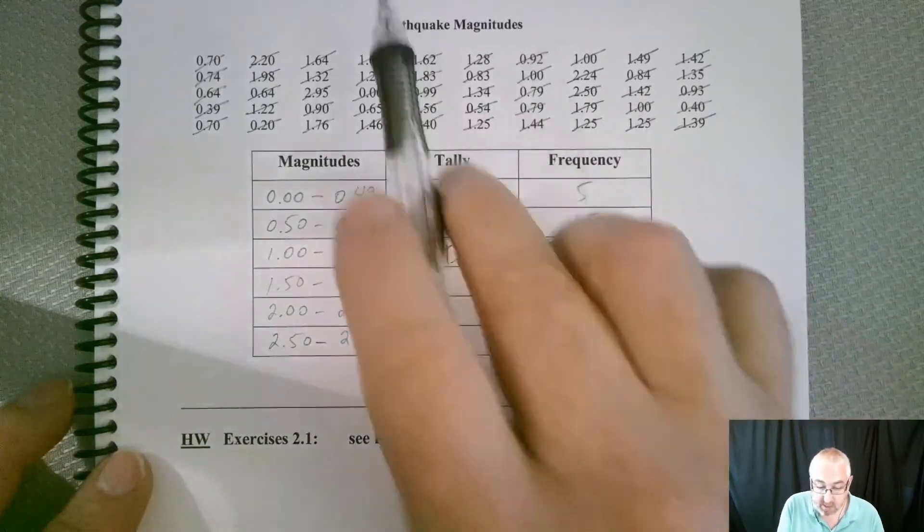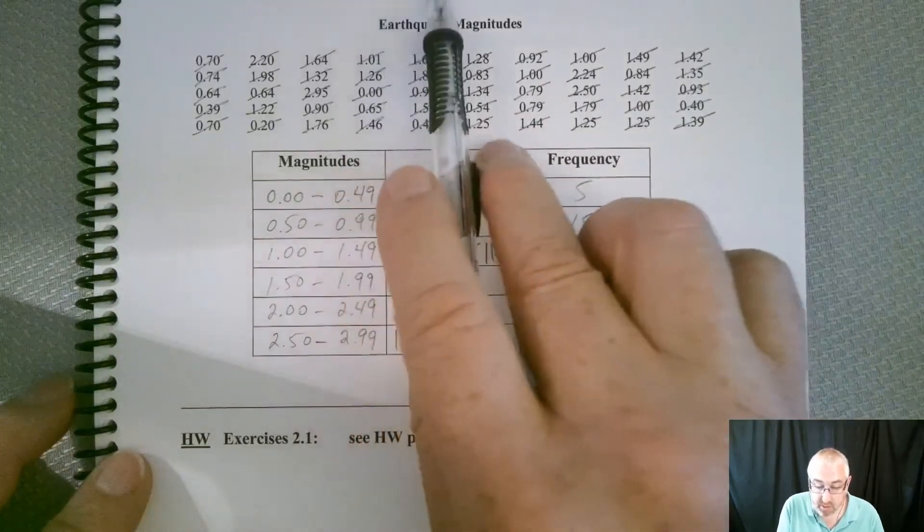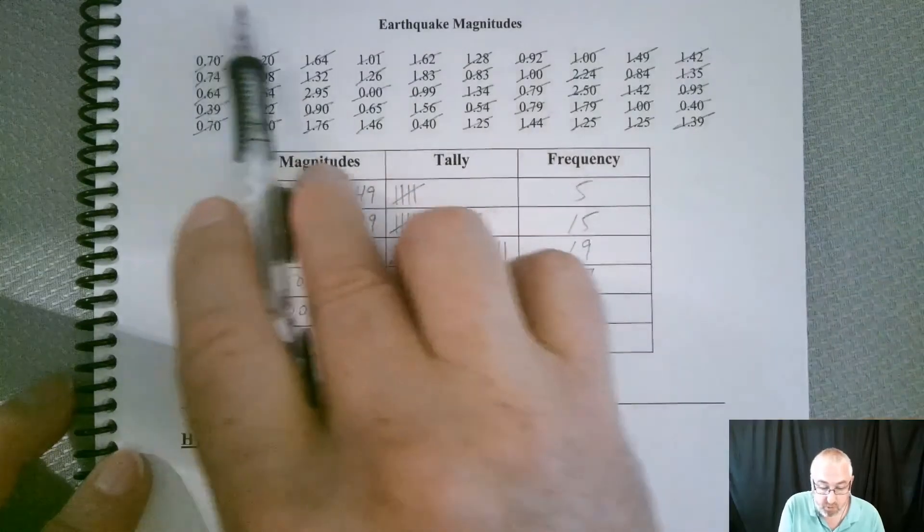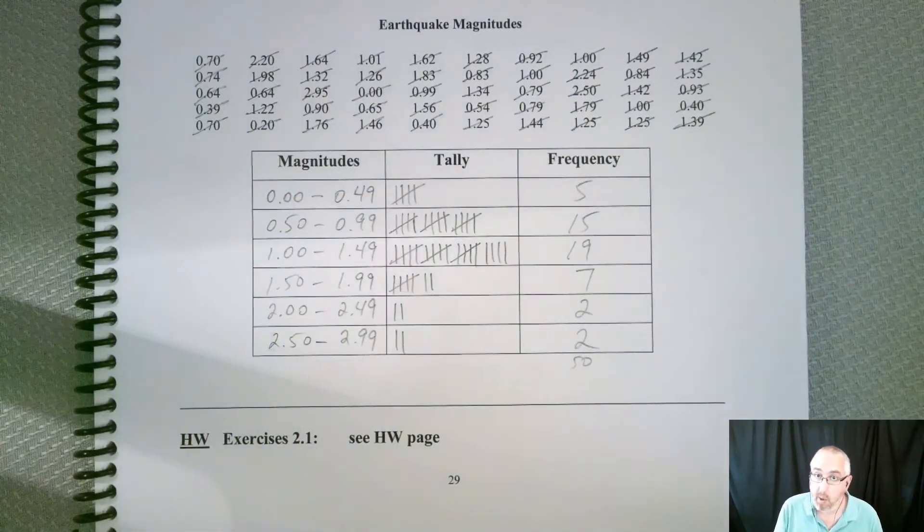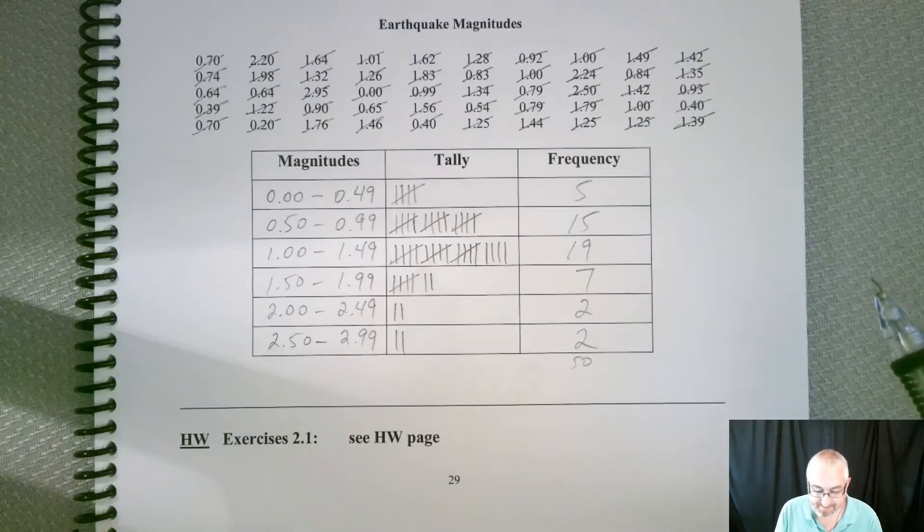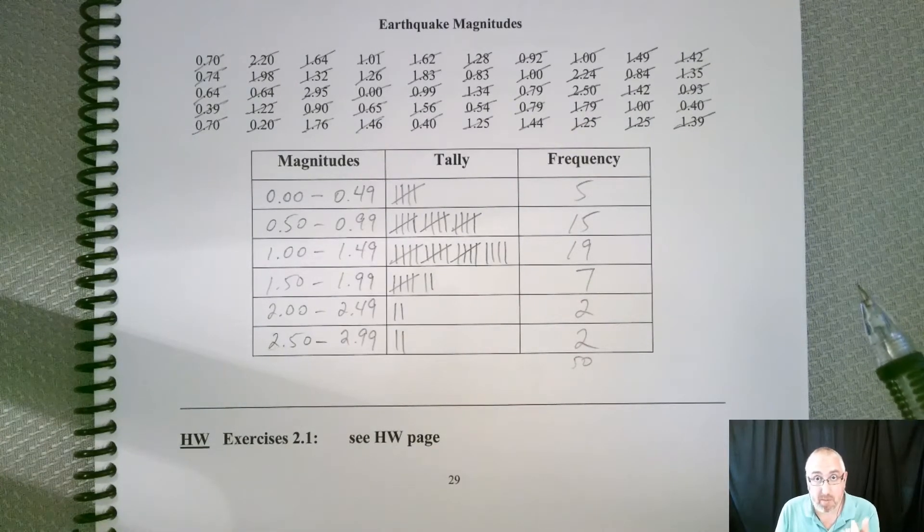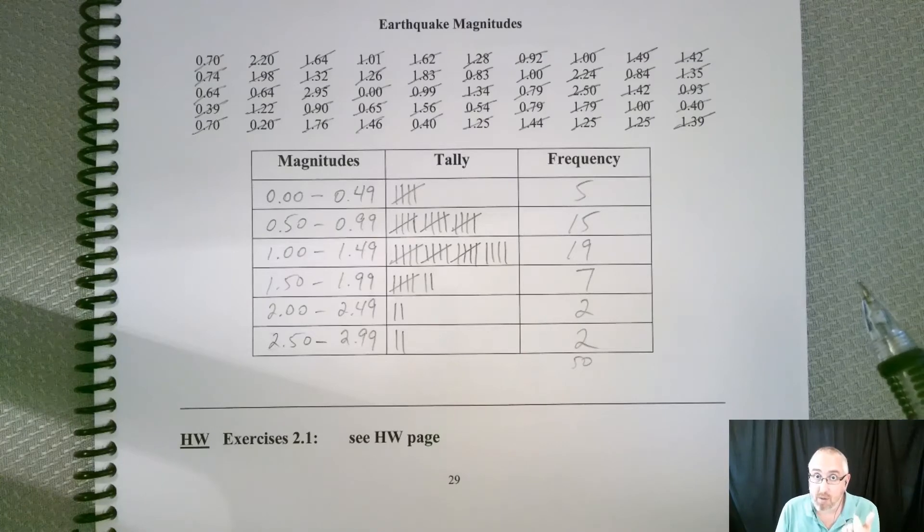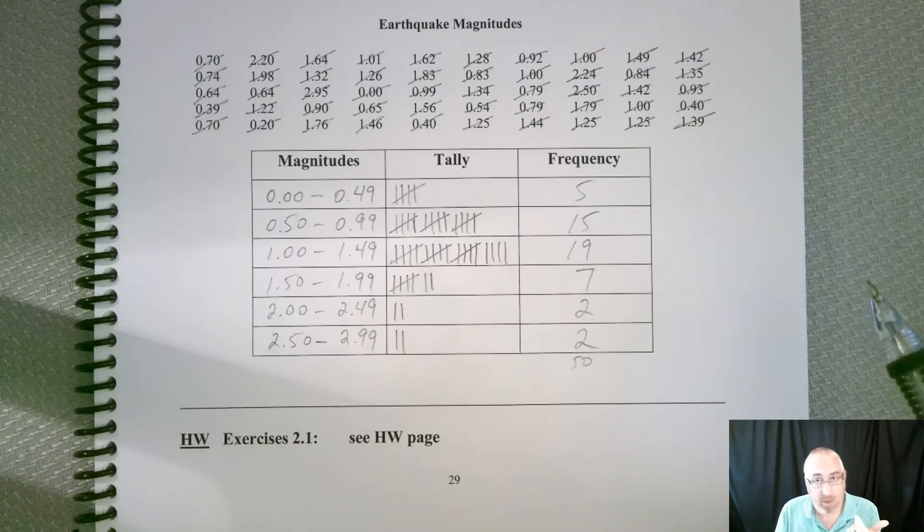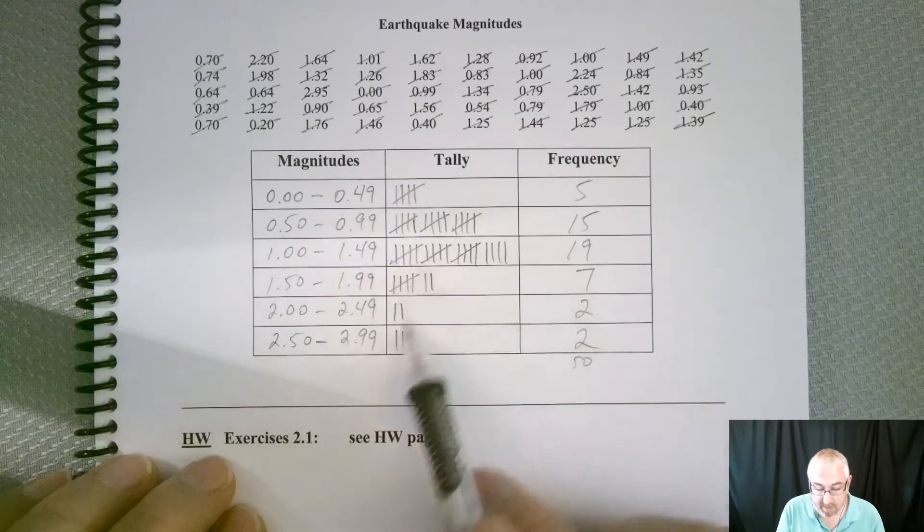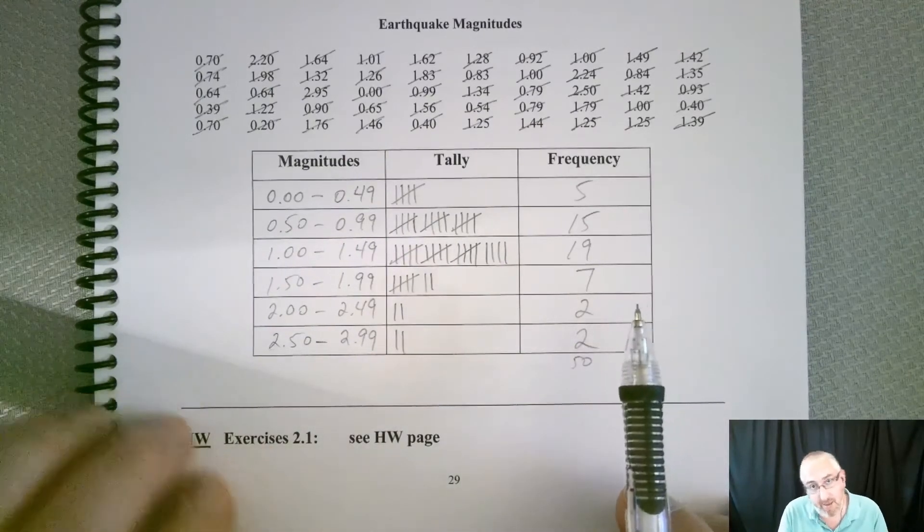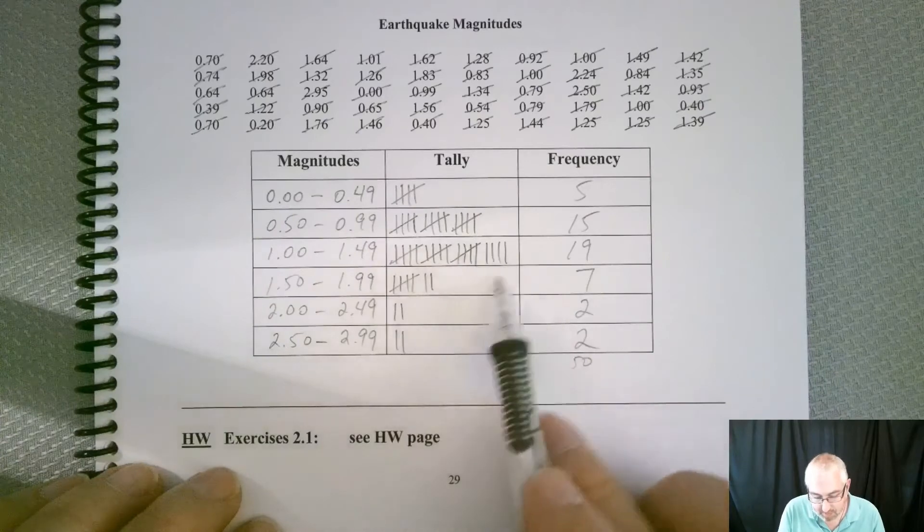Now, let's answer the question. Using a very strict interpretation of the requirements for a normal distribution, do the magnitudes appear to be normally distributed? Well, strictly, meaning both of those requirements pretty darn closely followed, only one of them is. It starts low, it goes up, and it comes back down. You can kind of turn your head sideways and see it goes up and it comes back down.